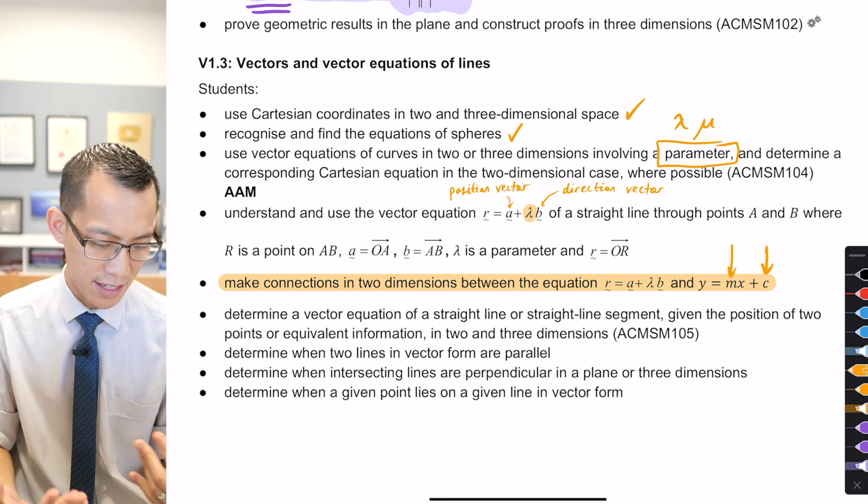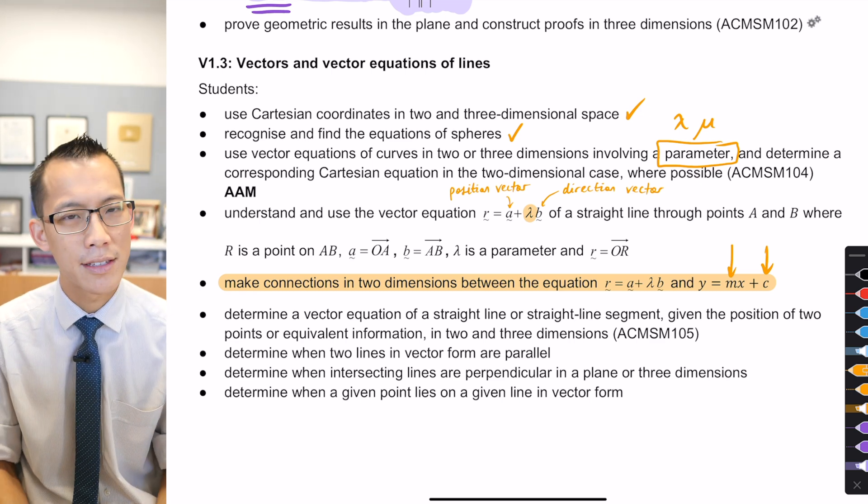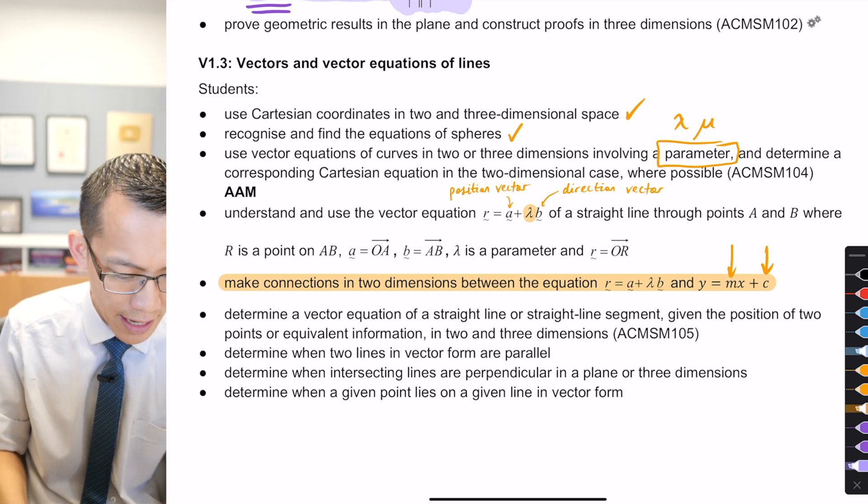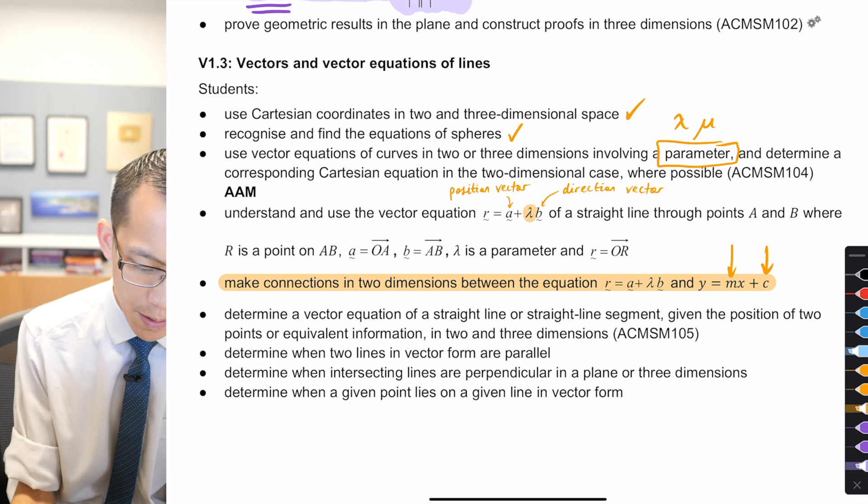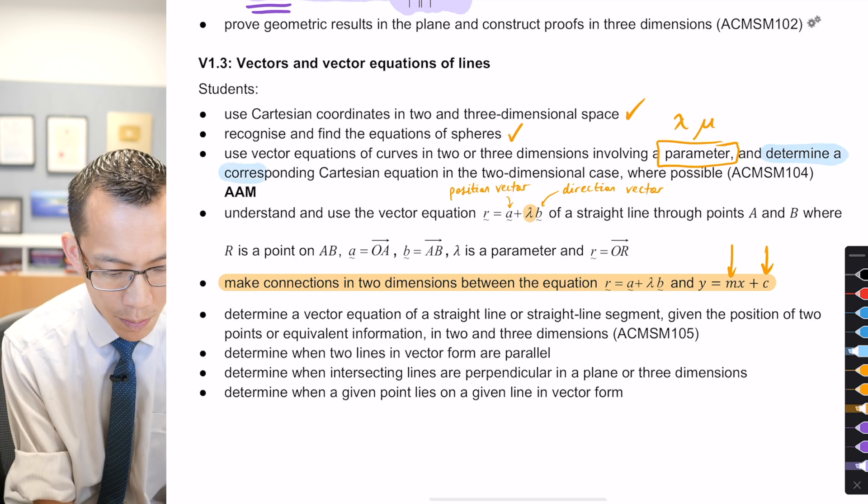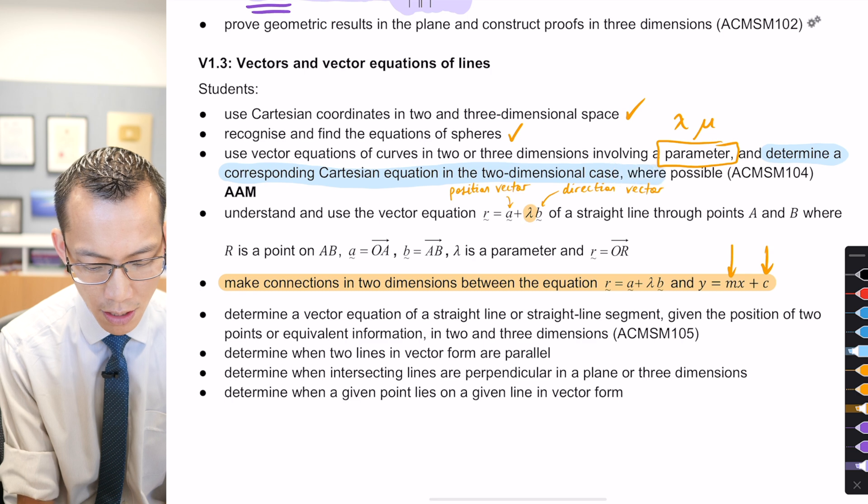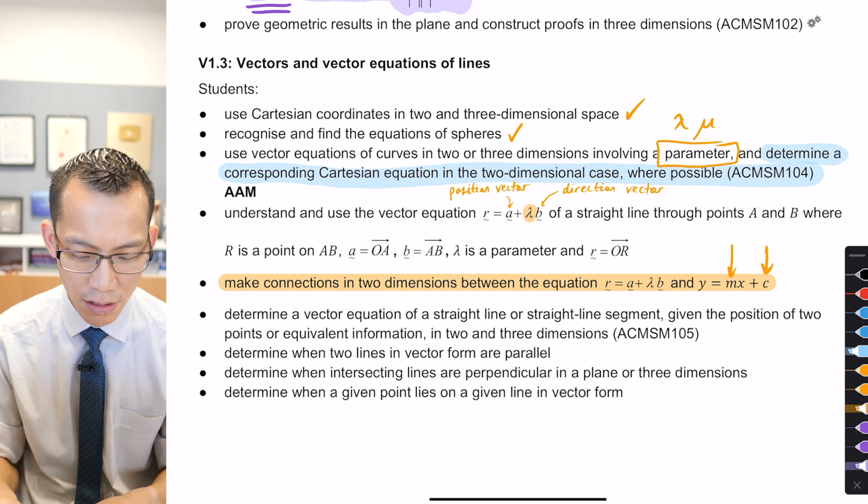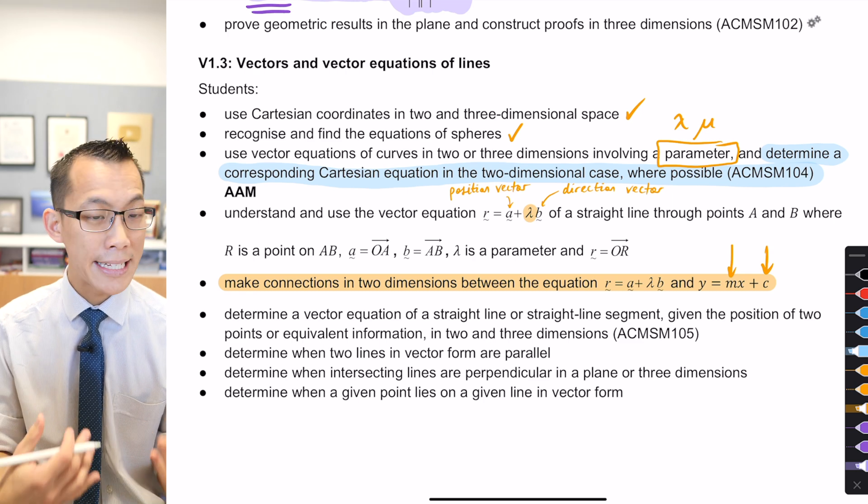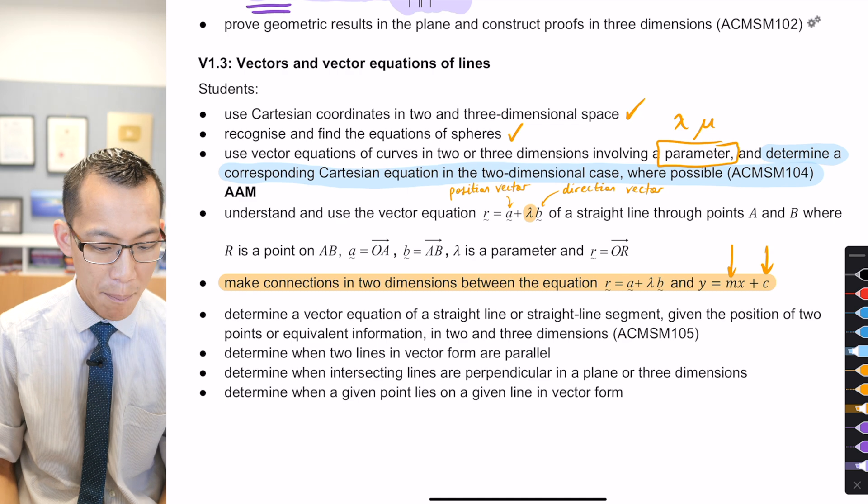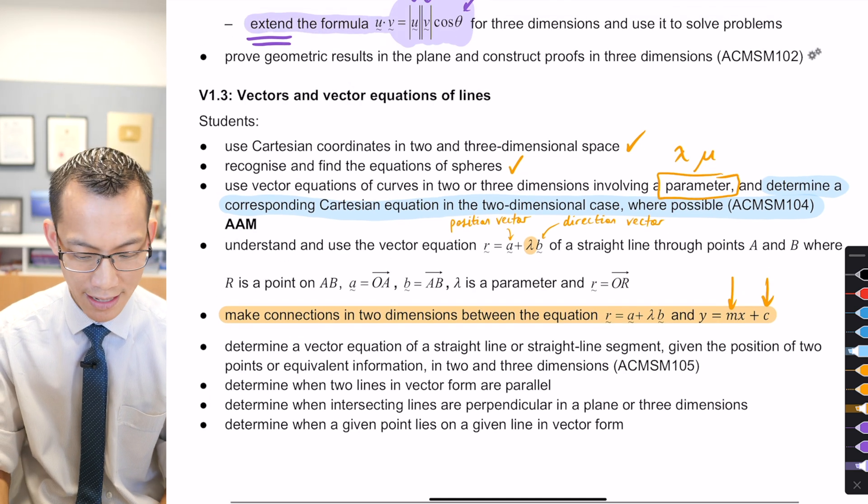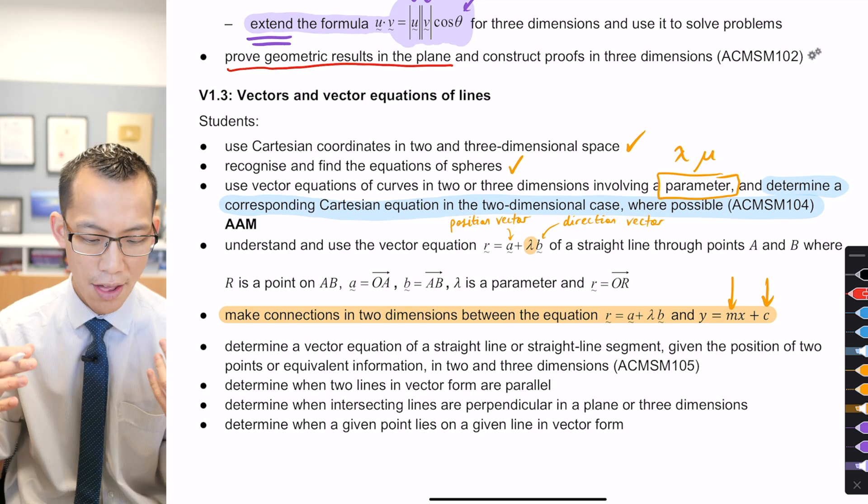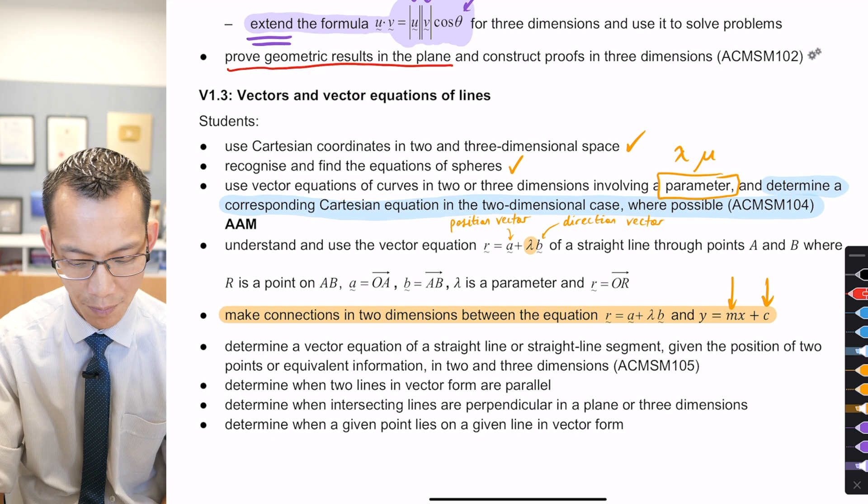And then most of the stuff that the rest you can see there is just a bit of a list, it's like determine this, determine that. So these are the kinds of things that the exercises have been working through. Now I said the thing that I skipped over a bit, and it's here. It says up in the third dot point it says determine a corresponding Cartesian equation in the two-dimensional case where possible. Now we haven't really explicitly done this. I may have assigned a question or two that asked you to do this but we haven't actually done it together and because this is quite an important idea that's actually what I want to spend today's lesson working on.